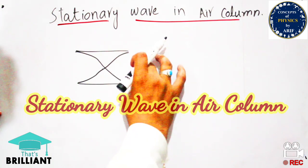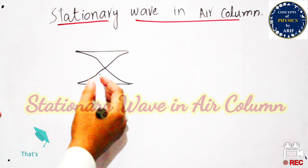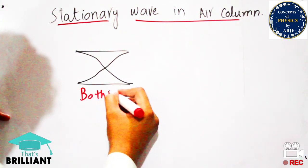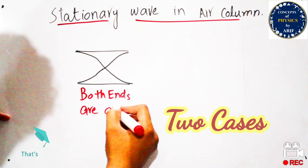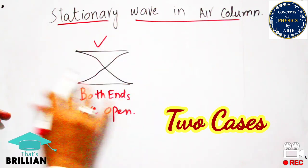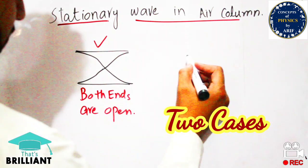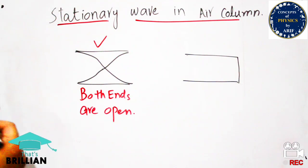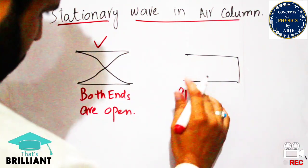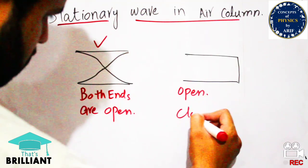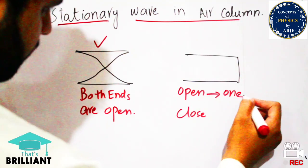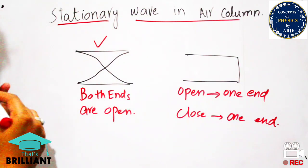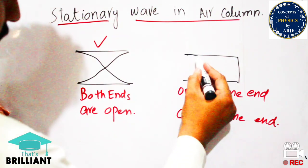The first category is a pipe which is open from both sides, in which nodes and antinodes are produced. The antinode is produced at the open ends because the air column cannot be restricted there, while the node is produced in the center. In the second case, when one end is closed and one end is open, air molecules are restricted at the closed surface, so the antinode is produced at the open end and the node is produced at the closed end.